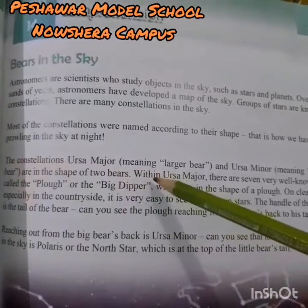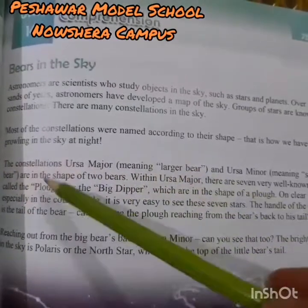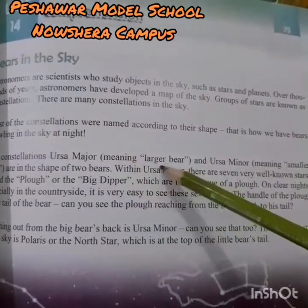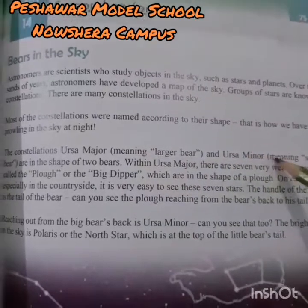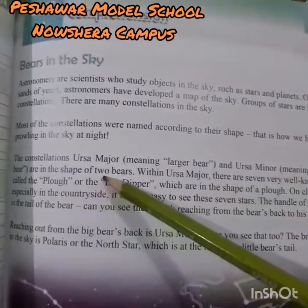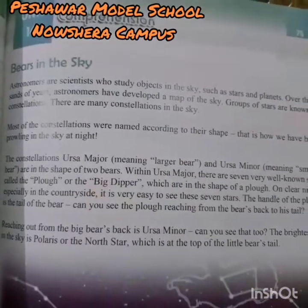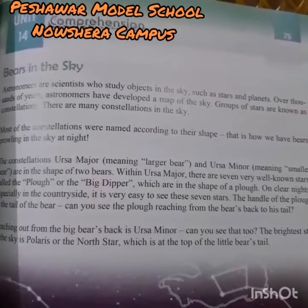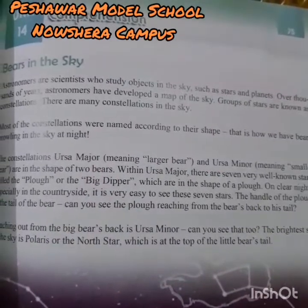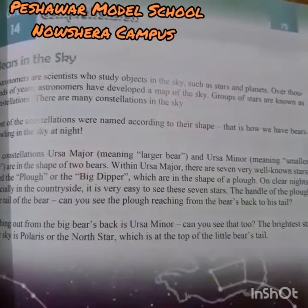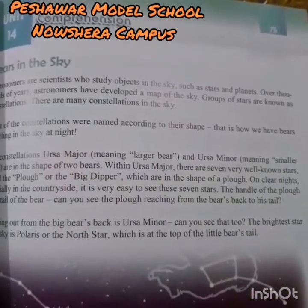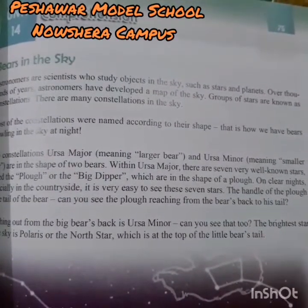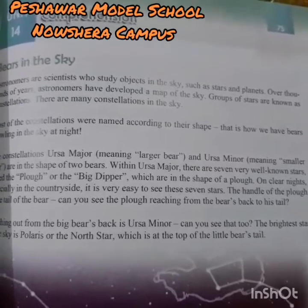The constellation Ursa Major, meaning 'larger bear,' and Ursa Minor, meaning 'smaller bear,' are in the shape of two bears. They were given these names because Ursa Major looks like a larger bear and Ursa Minor looks like a smaller bear — because of their shapes. Within Ursa Major there are seven very well-known stars. Our answers — 'larger bear' and 'made of seven stars' — are correct.